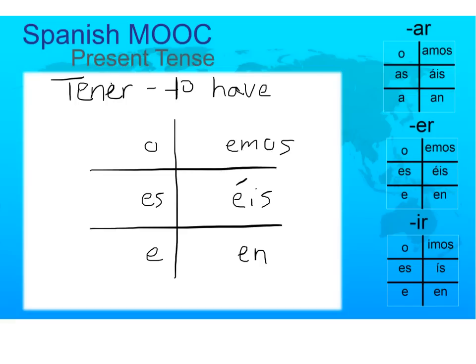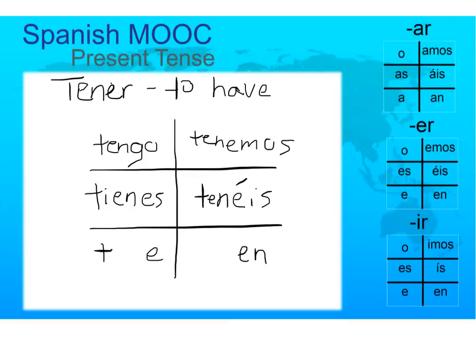Tener is an irregular verb. It's regular for tenemos and tenéis — you just take off the -er and put on that ending and you're done. For the rest, it has an irregular format. For yo, it's tengo. And for tú, él, ella, and ellos, you change 'ten' to 'tien': tienes, tiene, and tienen. This is a somewhat common format — these four will commonly have the same spelling for that stem. Tener is especially unusual because it also has an extra irregularity on the yo form: tengo.